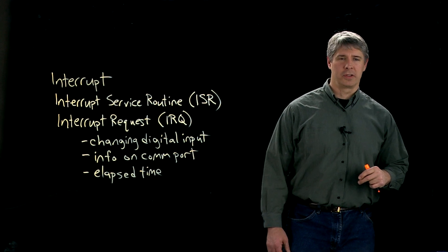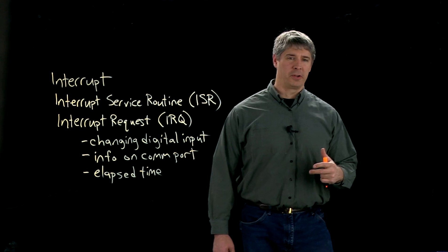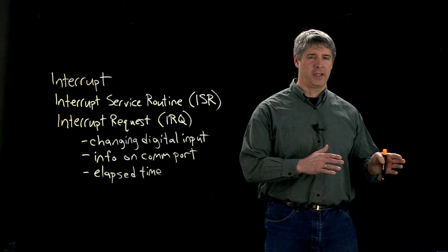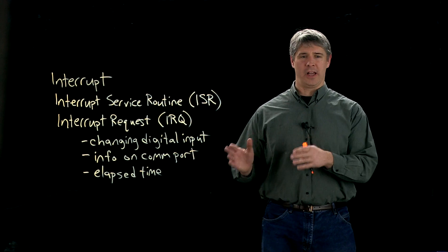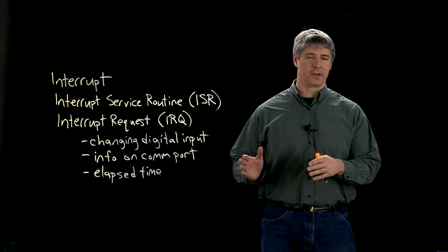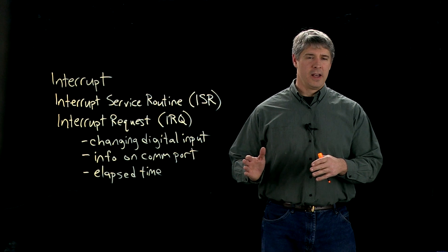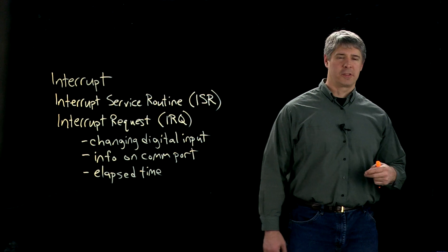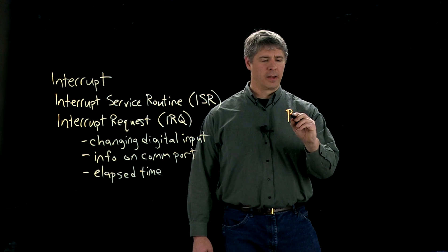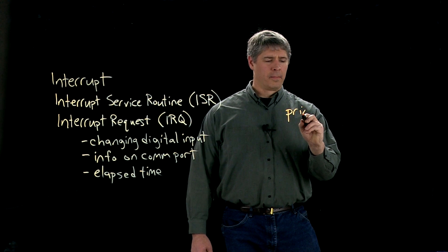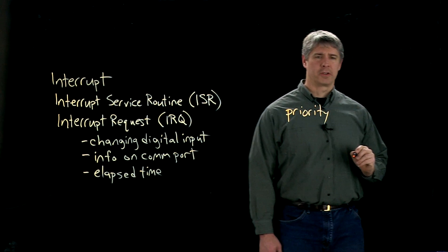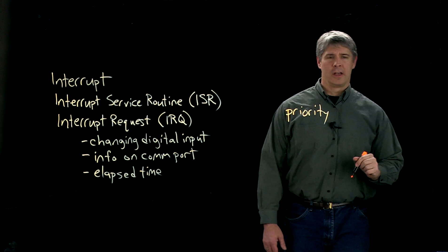But what if you have two ISRs? For example, you could have the alarm interrupt service routine as well as the controller interrupt service routine. In that case, you should specify the priority of each of those interrupt service routines.